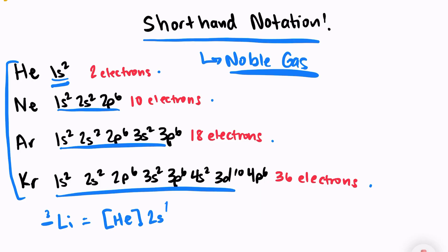And for lithium, because lithium only has three electrons, writing helium isn't super helpful. But the noble gas configuration is helpful for our larger elements.